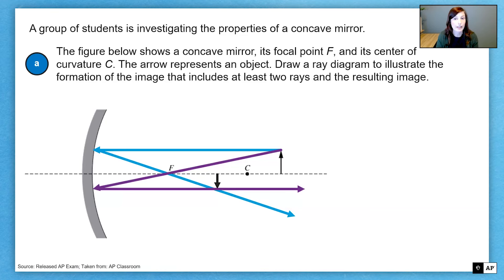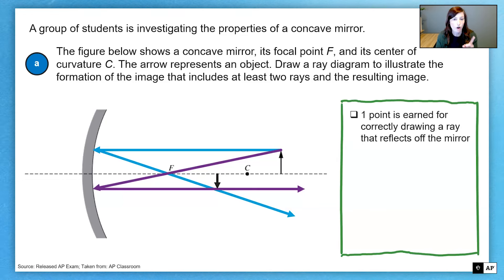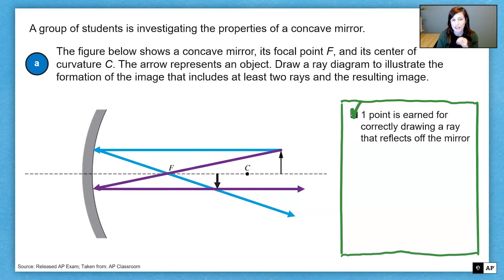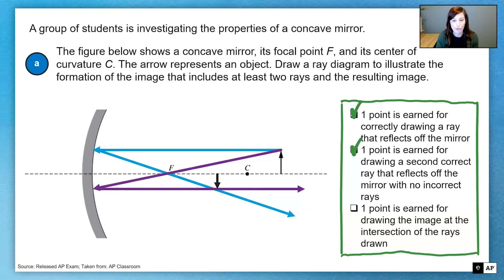Let's look at how we would get points on this part. The first point is awarded just for drawing one correct ray that reflects off the mirror. The second point, you've got to draw a second ray and no incorrect ray — we did that with our purple one, so we would get that point. And then lastly, to get the final point, we need to draw the image at the intersection of the reflected rays, which we did.